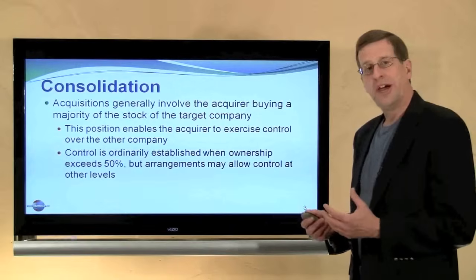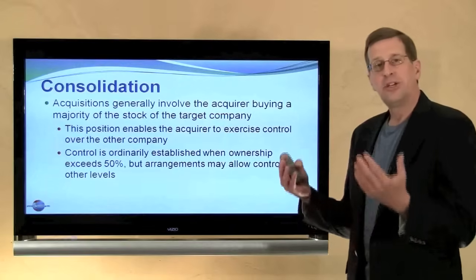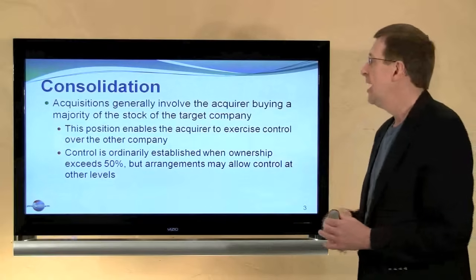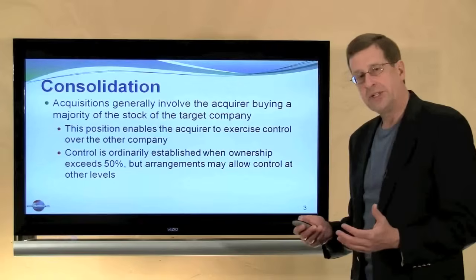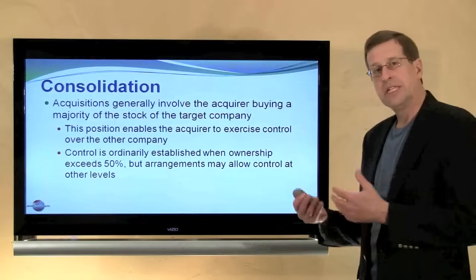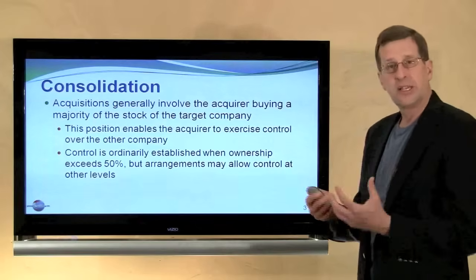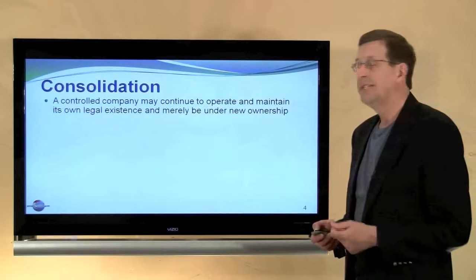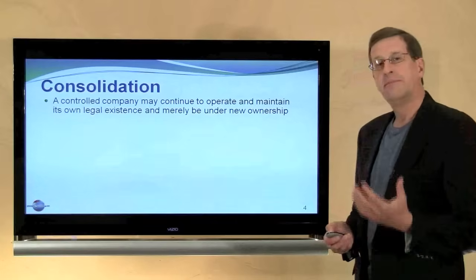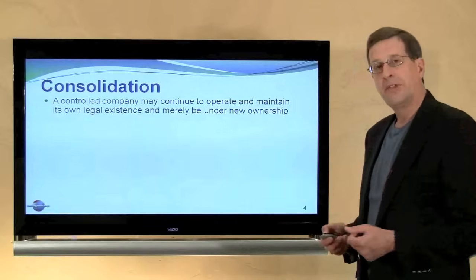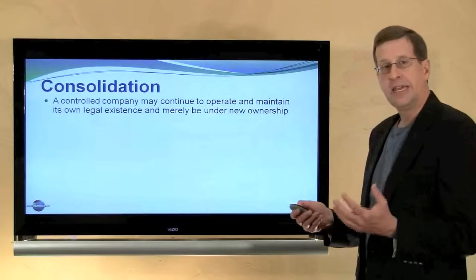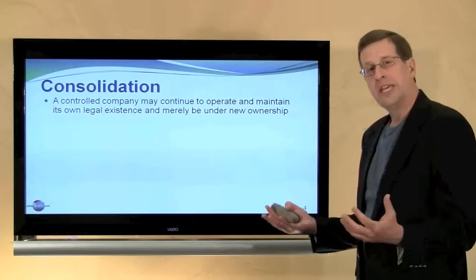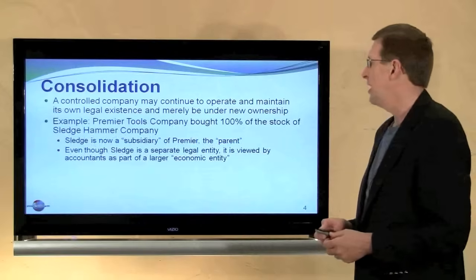Once one entity controls another, accountants say that rather than having two separate economic entities, they are essentially married and become one economic entity. We then move on to the preparation of consolidated financial statements that show the parent company and subsidiary as one consolidated unit. A controlled company may continue to operate and maintain its own legal existence under new ownership, but we will still prepare consolidated statements. Legally you may have a separate parent company and a separate subsidiary, but for reporting purposes we show a consolidated picture.